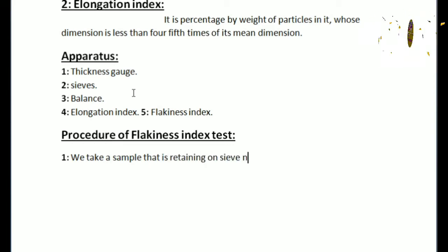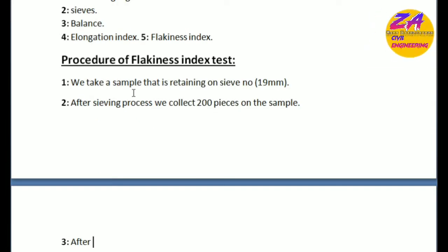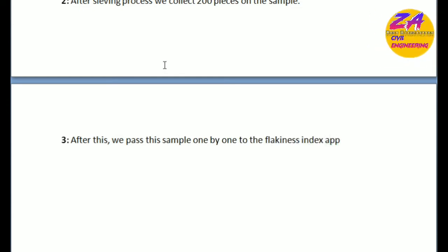We will discuss these two parts: first flakiness index and after this elongation index. First step: we take a sample that is retained on sieve number 19 millimeters. Second step: after sieving process we collect 200 pieces of the sample.